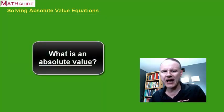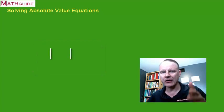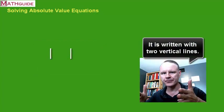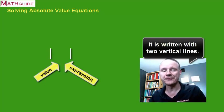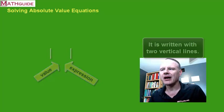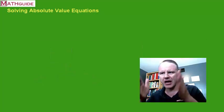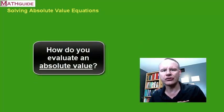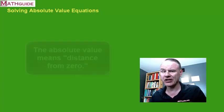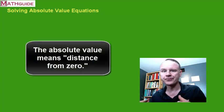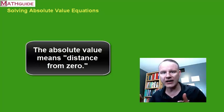Let's talk about what an absolute value is. Absolute value is written with these vertical lines and we put either a value or an expression inside. Absolute value is a pretty simple definition — it is really just the distance from zero. So when you're taking the absolute value of a quantity, you just figure out how far it is away from zero.